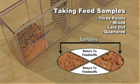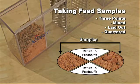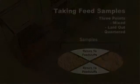Samples should be taken from three points, mixed and then laid out and quartered. Two opposite quarters should then be taken for testing.